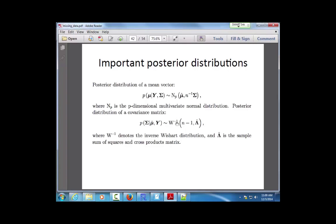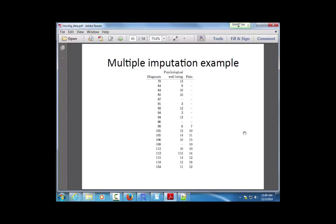Similarly, the posterior distribution for the covariance matrix, assuming normality and a Jeffrey's prior, is the inverse Wishart distribution: W-inverse(n-1, Lambda-hat), where Lambda-hat is the sample sum of squares and cross-products matrix — the covariance matrix scaled by n-1, giving the sum of (x minus x-bar)(y minus y-bar) terms.